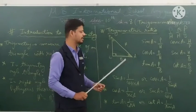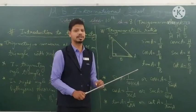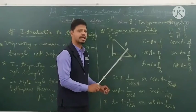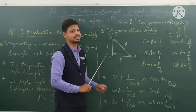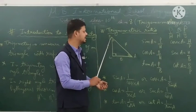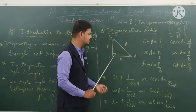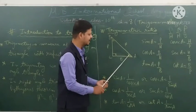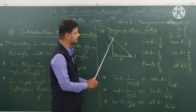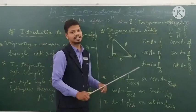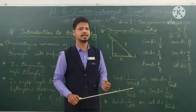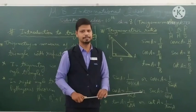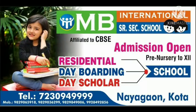An important concept: whichever angle is given in the question, the side opposite to that angle becomes the perpendicular. If angle A is given, the side opposite to A is BC, so BC is the perpendicular. If angle B is given, the side opposite to B is AC, so AC becomes the perpendicular. The side opposite to 90 degrees is always the hypotenuse, and the remaining side is the base. Hope you understand this video, thank you.